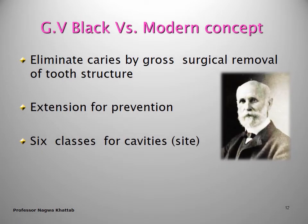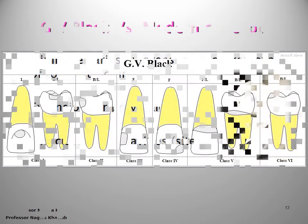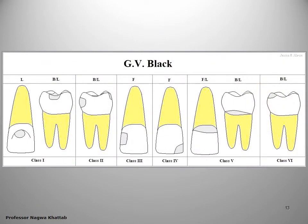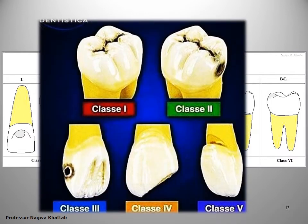The older classification is the G.V. Black classification. This concept is based on elimination of caries by gross surgical removal of tooth structure, based on the principle of extension for prevention. It classifies caries into six classes, which are the six classes of G.V. Black.